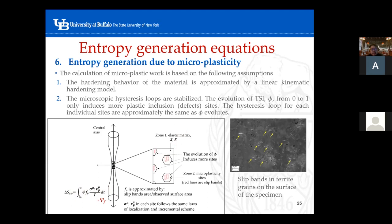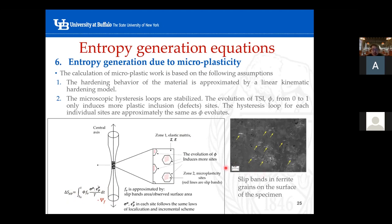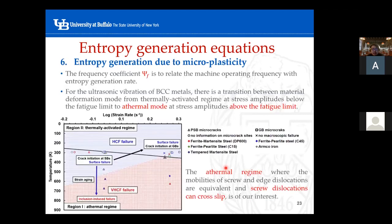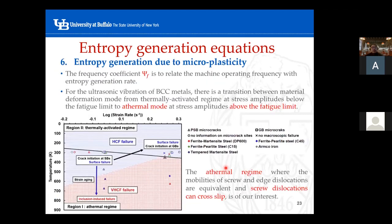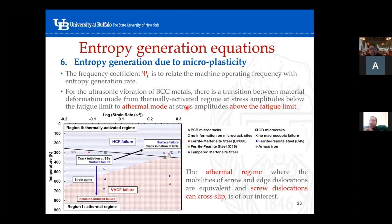A question was asked: can you explain what cross-slip is? Cross-slip is when two dislocations kind of cross like this — they have an angle where one dislocation is closely aligned with another dislocation in a different direction. I can show you a picture of cross-slip after the presentation.